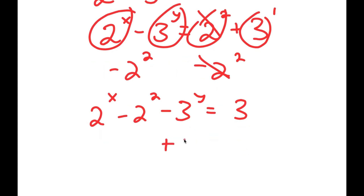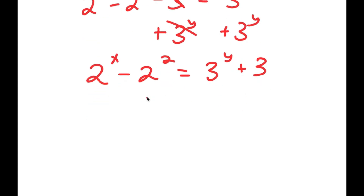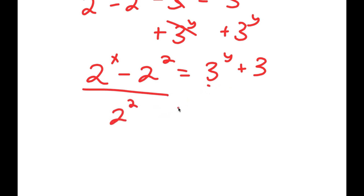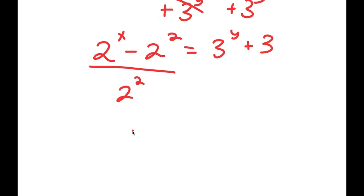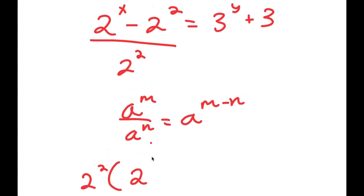Then I'm going to add 3 to the power of y on both sides. These two cancel out and I get 2 to the power of x minus 2 squared is equal to 3 to the power of y plus 3. Now for my left hand side, I'm going to divide by 2 squared. Using the rule a to the power of m over a to the power of n equals a to the power of m minus n, that gives 2 to the power of x minus 2.